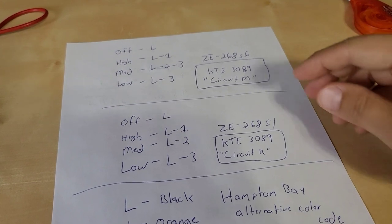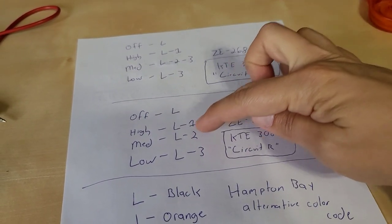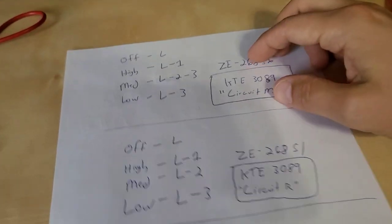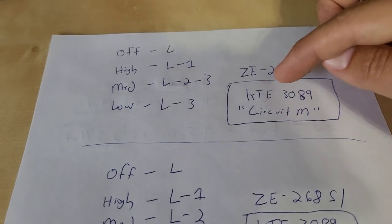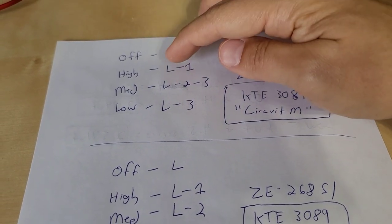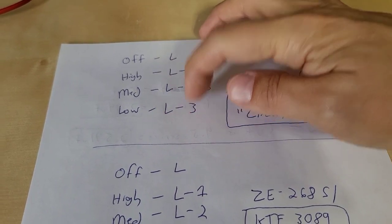Now as an addendum to my original video, again I thought it was this setup where it would be L to 1, L to 2, L to 3, circuit R. It was not the case. The way the correct one is up here is a circuit M or a ZE268S6 and that connects L to 1, L2 and 3 for medium speed and then L to 3. And the way that it's working after I did out the math.